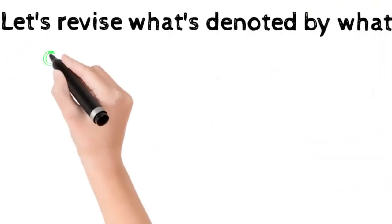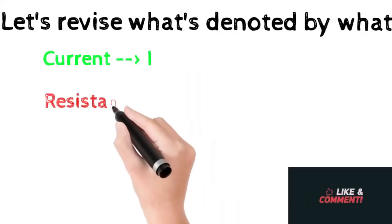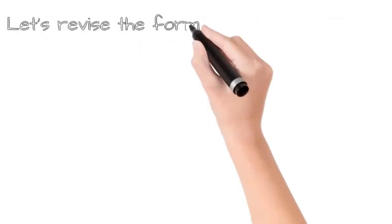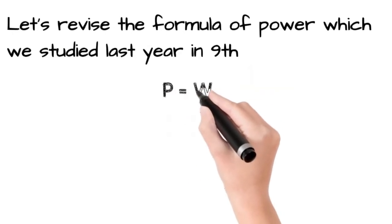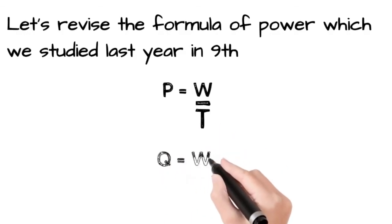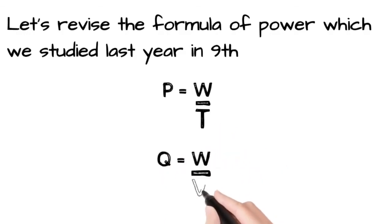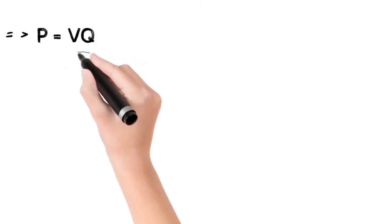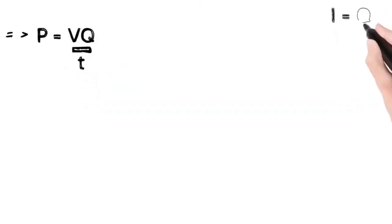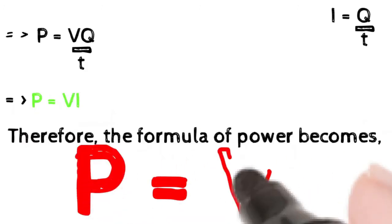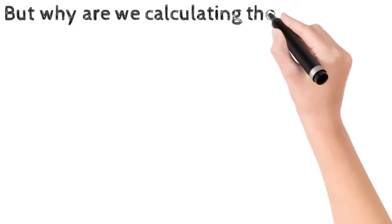Let's revise the relevant quantities: current is denoted by I, resistance by R, potential difference by V, and charge by Q. Recalling the formula of power from class 9: power equals work by time. Since charge equals work by potential difference, work equals potential difference into charge. Substituting into power: P = VQ/T. And since Q/T = I, we get P = VI. Therefore the formula of power is P = VI.